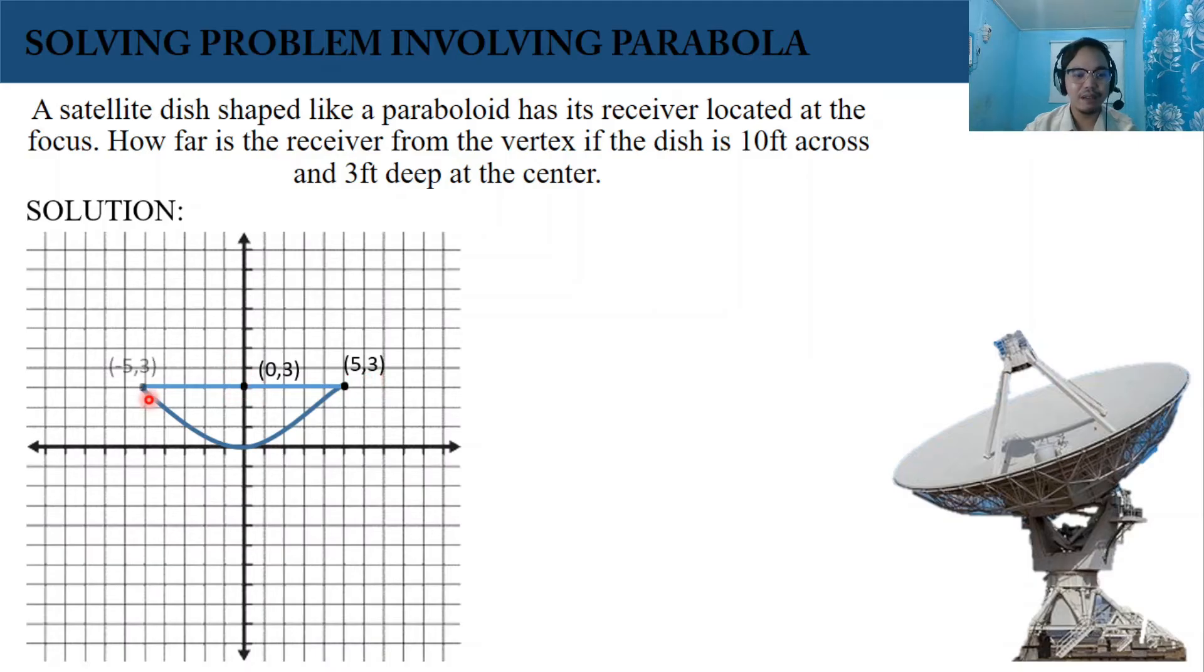To the other side, we have (-5, 3). Remember that this line segment is not the latus rectum because this point is not the focus. The focus is what we are finding. From the vertex going to the focus, that is where the receiver of the satellite dish is located.